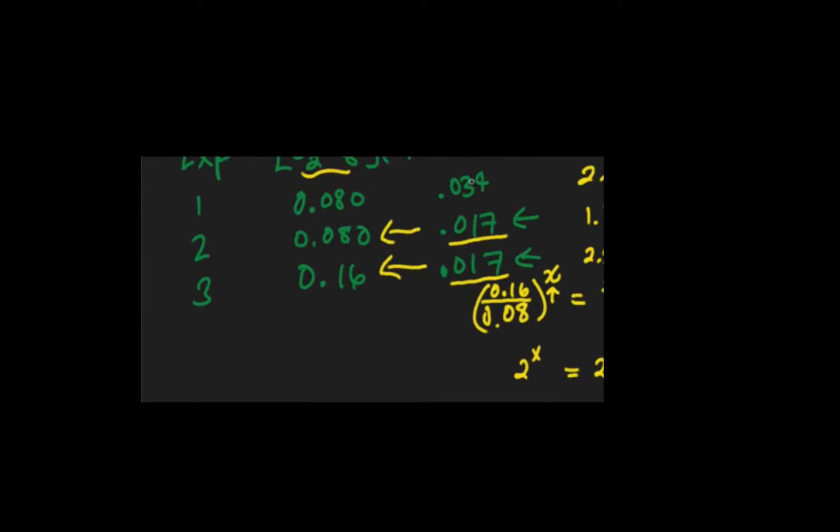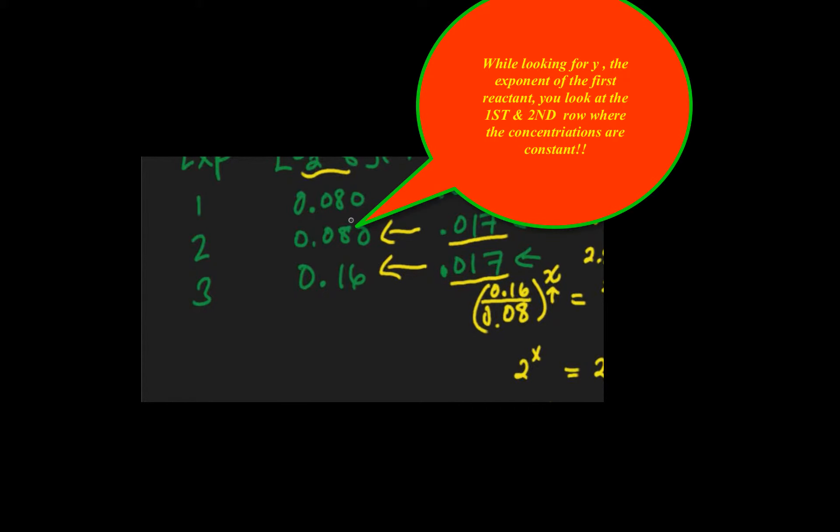Now to find the other one, we go back to our table and we ask ourselves, okay I need y. Y is the second column exponent, so I go to where the first column is constant.